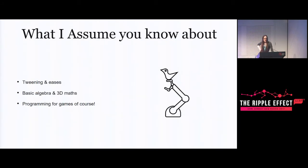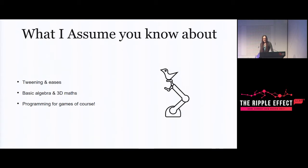I'm assuming you know what tweening and eases are - if you don't, please go look them up, you'll get a lot out of it, it makes so much stuff easier and nicer in games. I'm also assuming you know basic algebra and 3D maths, things like using vectors and what a polynomial function is. And I assume you're a game developer who's at least made a game.